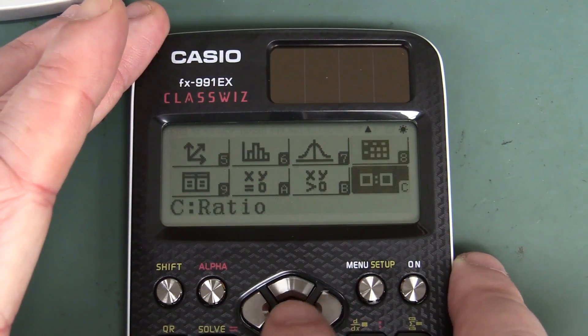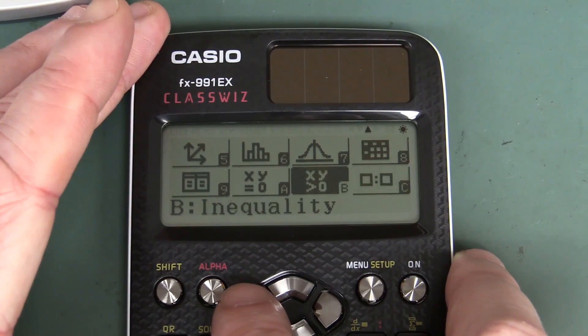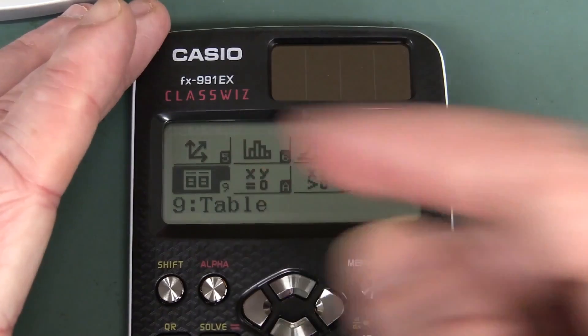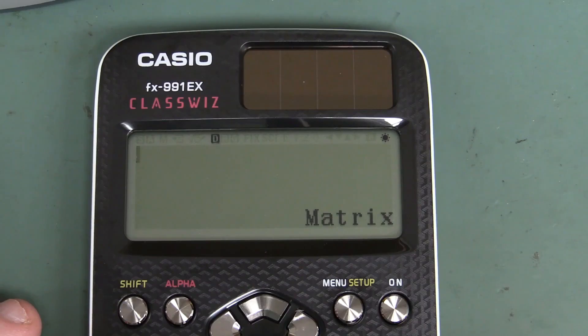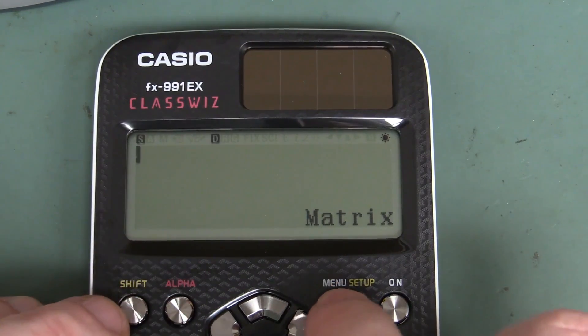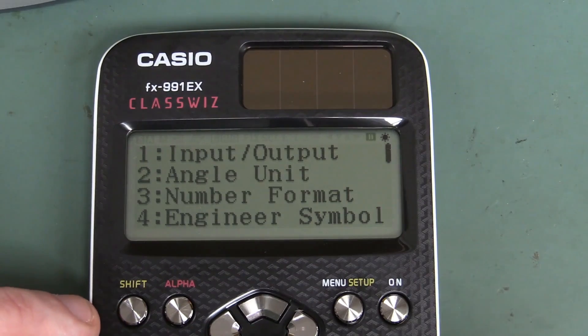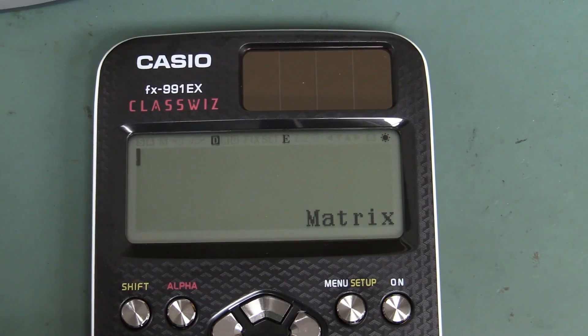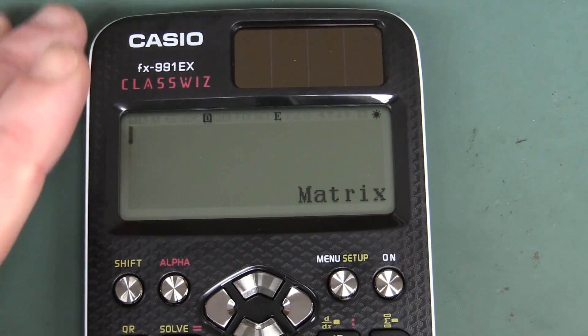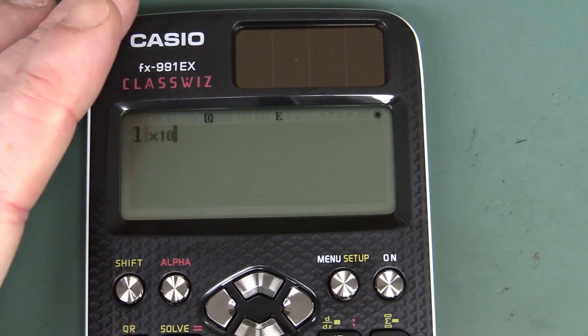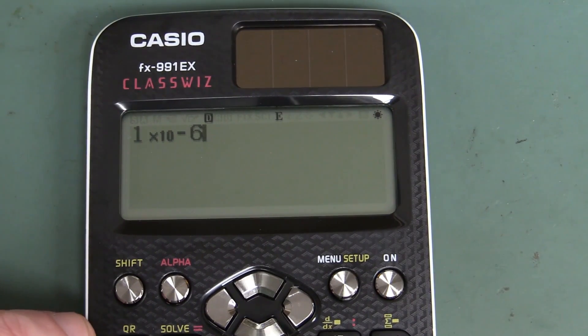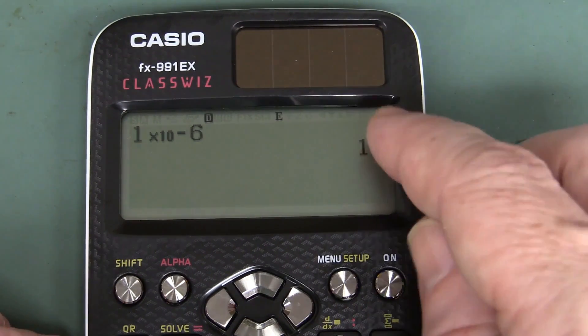So in addition to the spreadsheet, we've got ratios, we've got inequalities, equation functions and tables just like the old one had tables as well. And one thing of interest to us, of course, if we go into the setup here, we can set up our engineering symbols on. Thank you very much. So it'll now give us results in engineering units. Let's do one times ten to the minus six again, and it should now give us one micro. Beautiful.